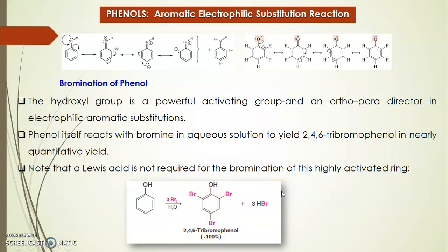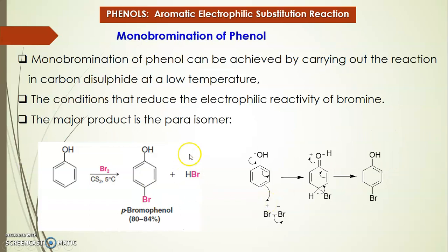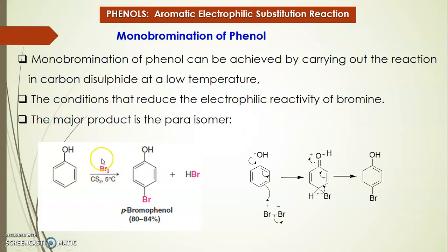The reaction of phenol with bromine gives 100% yield of 2,4,6-tribromophenol plus HBr. If you want to achieve monobromination, it can be done by carrying out the reaction at low temperature in the presence of carbon disulfide (CS₂) at 5°C. The low temperature reduces the electrophilic reactivity of bromine, giving a lower concentration of bromine so there is only the possibility of getting a monobrominated product — specifically the para-bromo product.